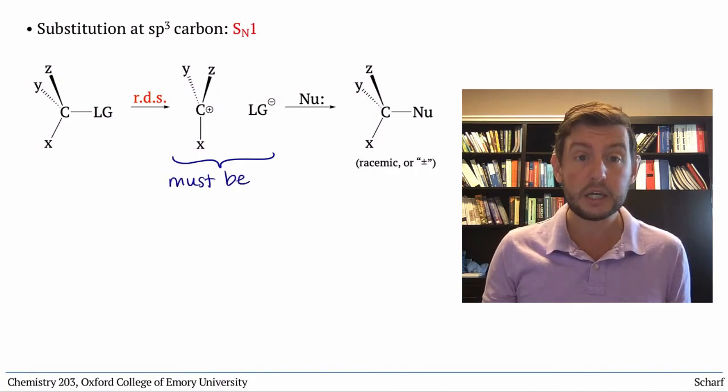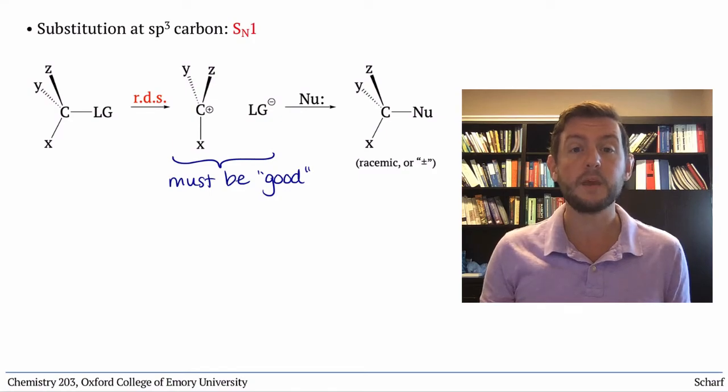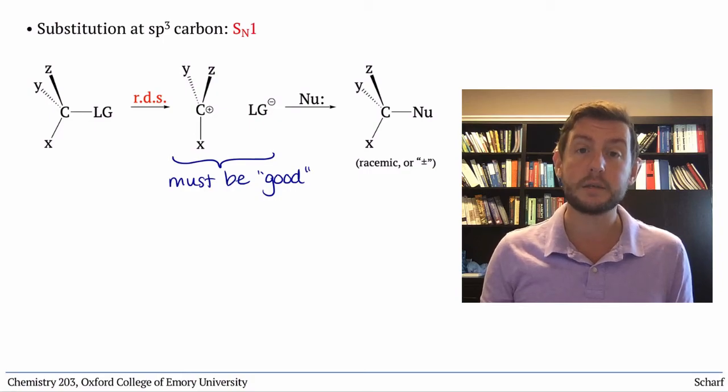The more stable the carbocation, the more rapid the SN1 substitution.